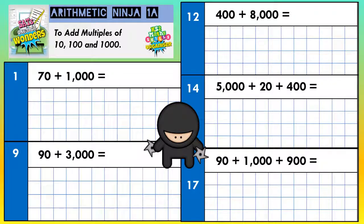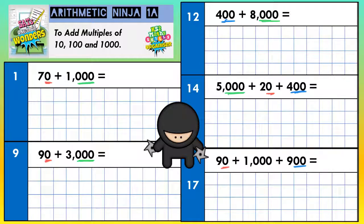Welcome, arithmetic ninjas, to adding multiples of 10, 100, and 1000. Multiples of 10 are numbers that end in a zero, so like 70, 90, 20. Multiples of 100 end in two zeros, so 400 and 900. And multiples of 1000 end in three zeros, like 3000, 1000, 8000, 5000.